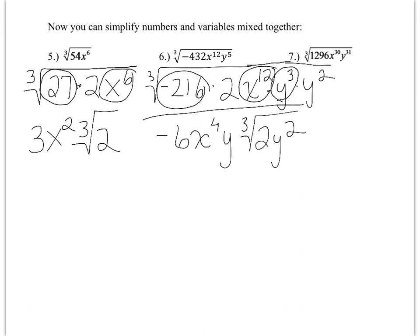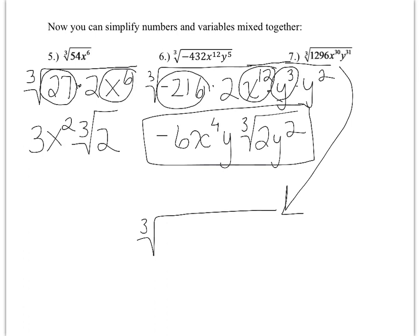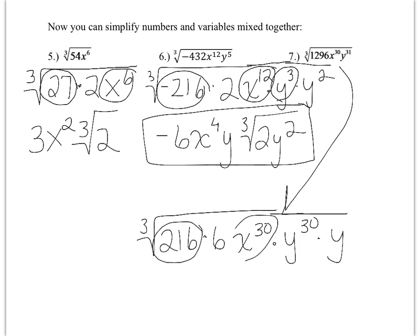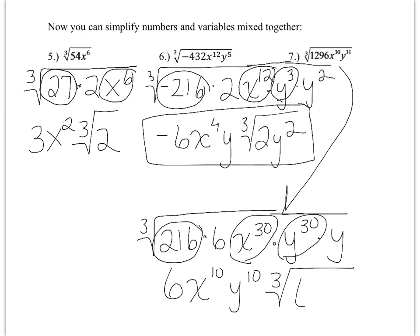If you really feel like you have it, go ahead and try number 7 on your own. For number 7, when I took 1296 and started dividing, I started with some of my bigger ones and found that 216 goes into it — 216 times 6. So I break that into 216 times 6. x to the 30th: 30 is divisible by 3, so I leave it as x to the 30th. y to the 31st is not, so I break that into y to the 30th times y. My perfect cubes are 216, x to the 30th, and y to the 30th. The cube root of 216 is 6. The cube root of x to the 30th and y to the 30th gives me x to the 10th y to the 10th. And I'm left with the cube root of 6y on the inside.